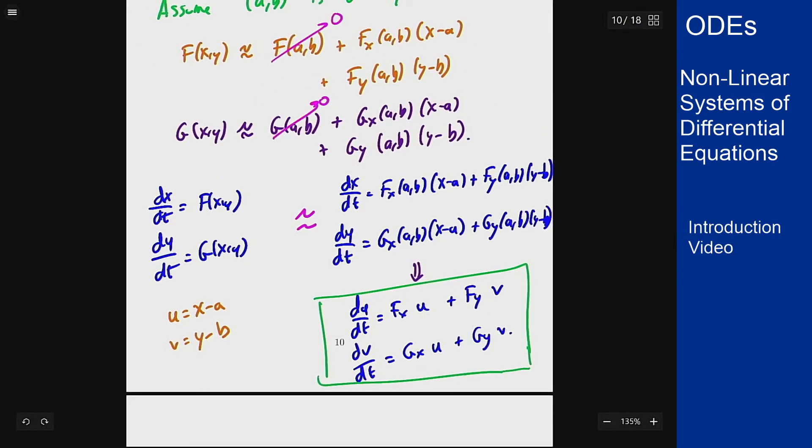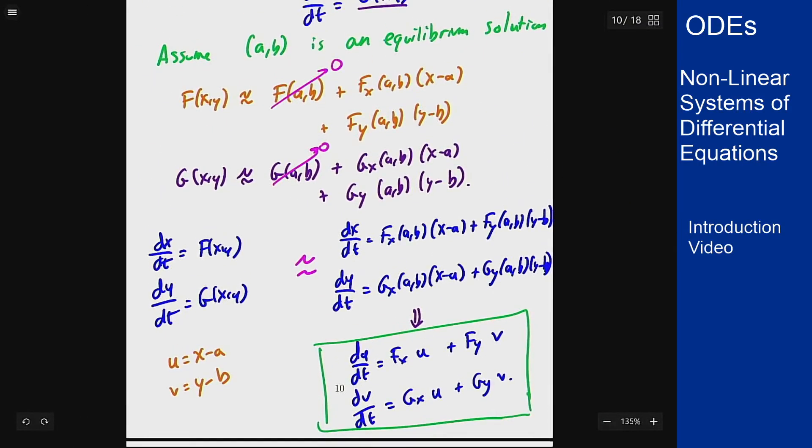This all comes back to derivatives and tangent line approximations—we're basically saying if I am close enough to this equilibrium solution, then my f behaves like this tangent plane. If I'm close enough to this (a,b) point, then my system should behave like this linear system. I can use it to determine is it stable, is it unstable, what's going to happen near that point by analyzing this linear system.